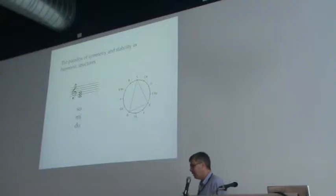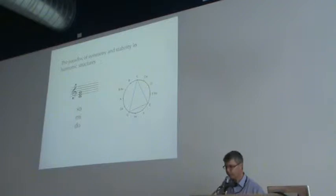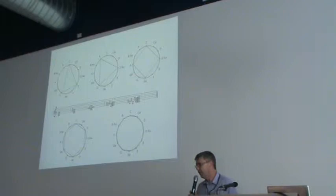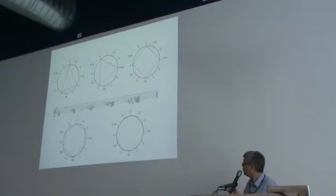Now, there's a problem here when we get to pitch, because we've said that symmetry should be associated with stability, but here is a particularly stable structure in Western music. But we can see on the clock face that it's actually asymmetrical. So how can we explain that? The answer, I'm sure, is in the harmonic series.